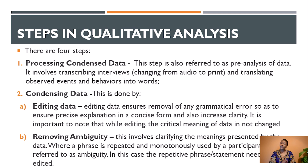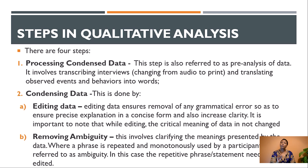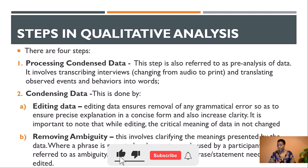The second step is condensing data, which involves five things. The first is editing, where you remove grammatical errors to ensure precise, concise explanation and increase clarity. Please note: when editing, do not lose the critical meaning of the data. Do not change what your respondents told you. You are only removing grammatical errors so the data flows clearly.